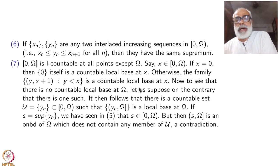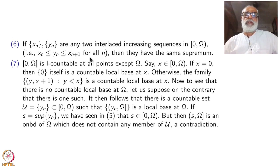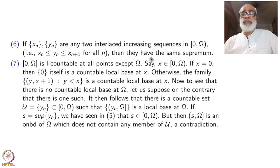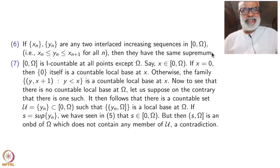If x_n and y_n are any two interlaced increasing sequences in [0, Ω), meaning x1 ≤ y1 ≤ x2 ≤ y2 ≤ ..., then they have the same supremum. Since increasing sequences in [0, Ω) are countable, they are bounded — we have seen this — and the supremum is the same. This is similar to what happens inside the real numbers.